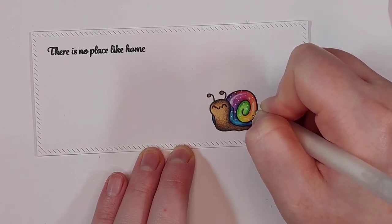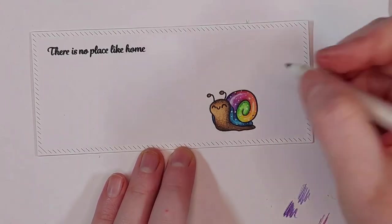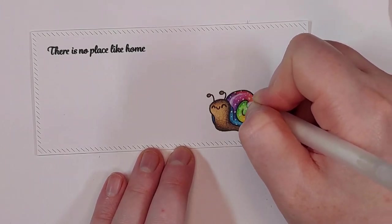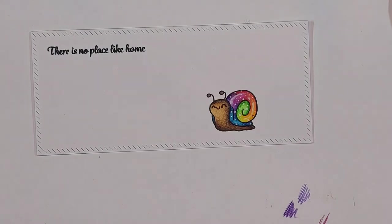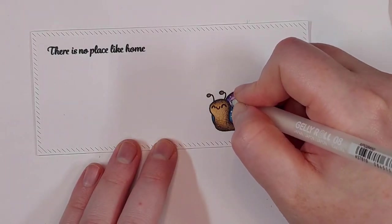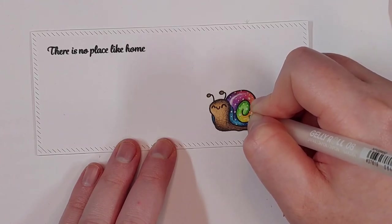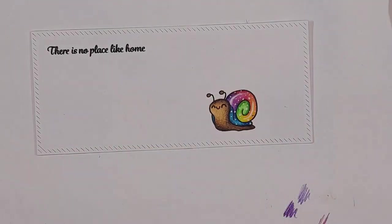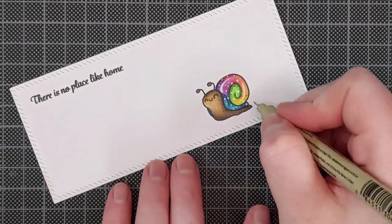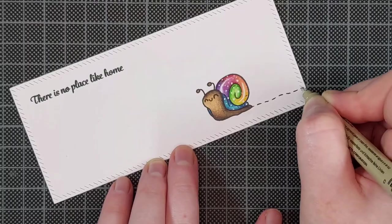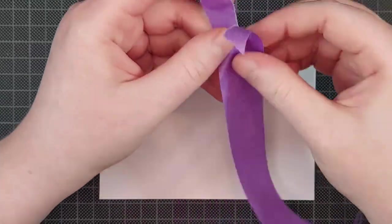I always try to vary my dots in size so it looks a little bit more fun. And then I go in one more time to brighten up the highlights. To add a tiny extra element to this card I'm adding a dash line as a snail's trail with a black fineliner.